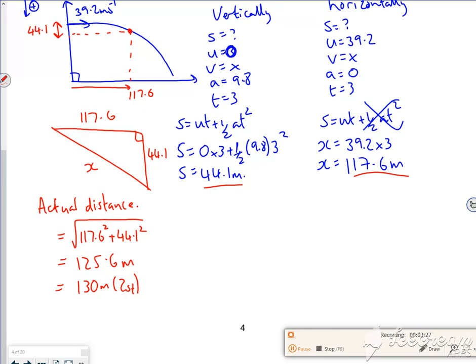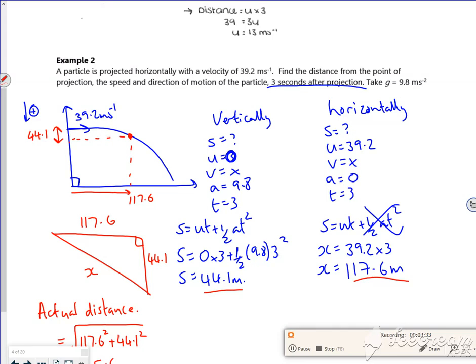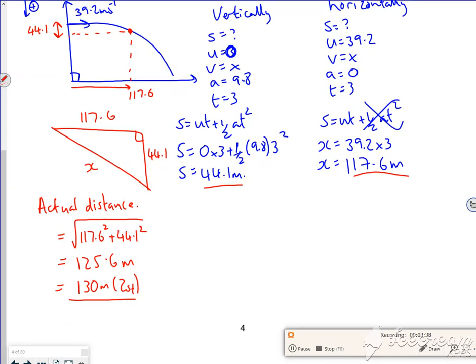So I've just done Pythagoras on those two distances. One thing I might have forgot about on the previous example was the fact that your G sorts out your accuracy. So have a look back and make sure I did it properly. But because G is 9.8, that accuracy there is 130. So I've got the actual distance.